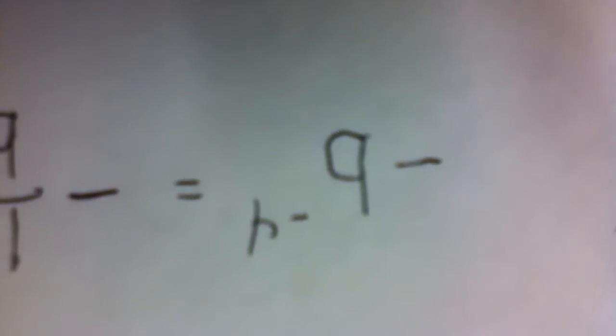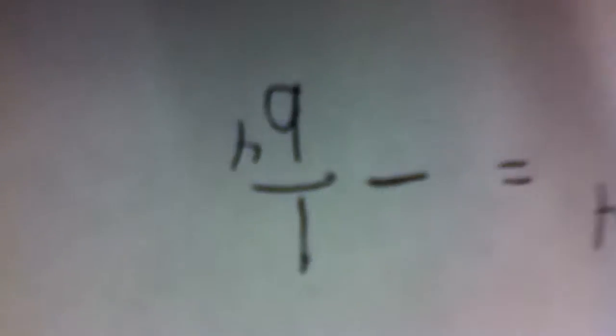Number 38. Negative b to the 4. Negative b to the 4 is negative 1 over b to the 4 and that's it.